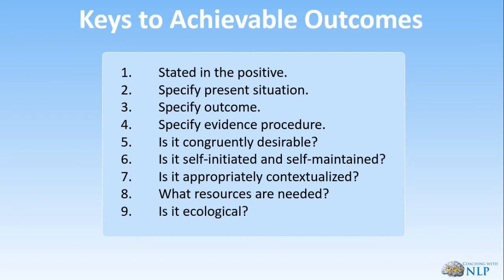Number nine: is it ecological? For what purpose do you want this outcome? What will you gain or lose if you have it? What will happen if you get it, what won't happen if you get it, what will happen if you don't get it, and what won't happen if you don't get it? Those sound like the same questions, but they are four different viewpoints — a wonderful set of questions to get more specific.